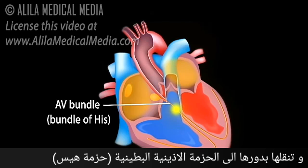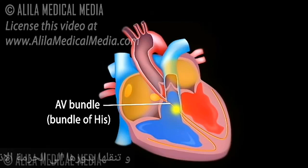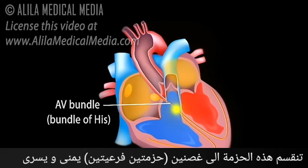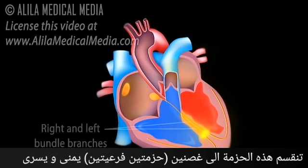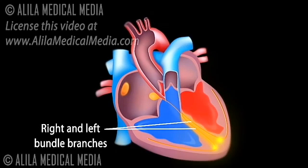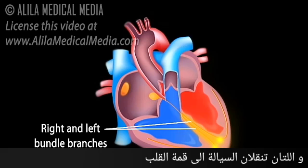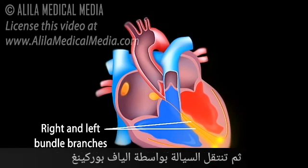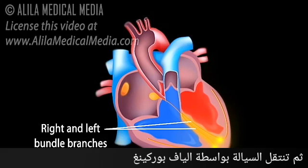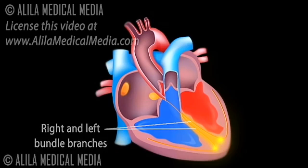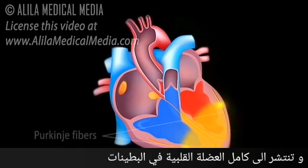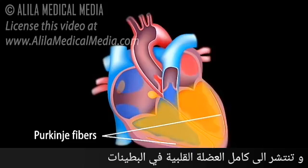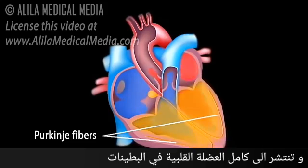The AV bundle, or bundle of His, is then divided into right and left bundle branches, which conduct the impulses toward the apex of the heart. The signals are then passed onto Purkinje fibers, turning upward and spreading throughout the ventricular myocardium.